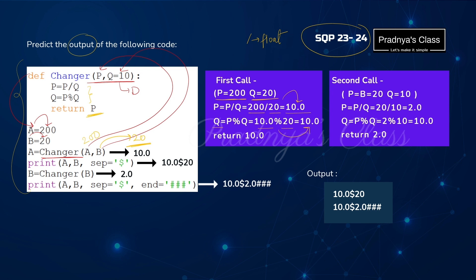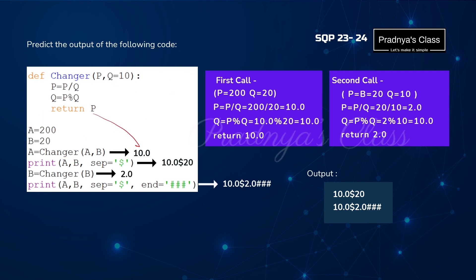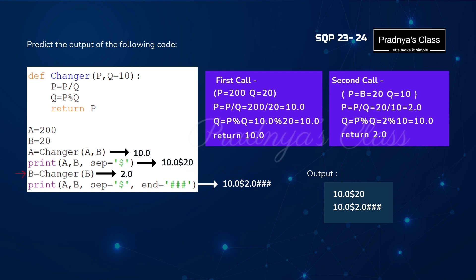With the return statement, we return the value of P, which is 10.0, stored back in variable A. In the next print statement, we print A (10.0) and B (20) with a dollar separator, giving the first print output. Then we call changer again passing only one parameter B, so P gets 20 and Q takes the default value of 10. P equals P divided by Q: 20 divided by 10 is 2.0, which is returned and stored in B.